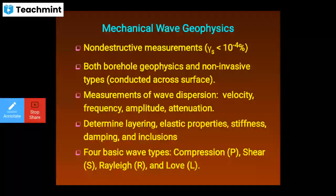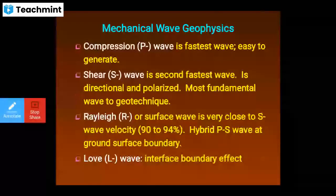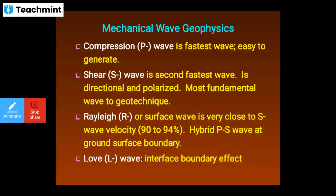The compression P wave is the fastest wave and easiest to generate. The shear S wave is the second fastest, is directional and polarized, and is the most fundamental wave for geotechnical methods. The Rayleigh wave (R) is a surface wave with velocity very close to S wave velocity — about 90% — and is a hybrid PS wave at the ground surface boundary. The Love wave (L) is an interface boundary effect.